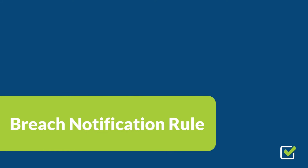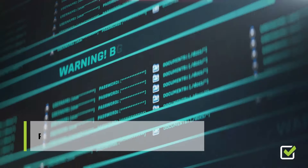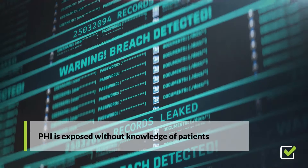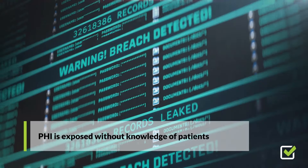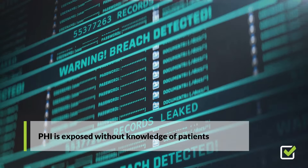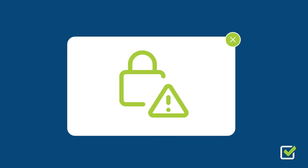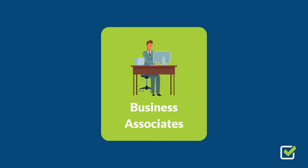The Breach Notification Rule defines the process when a data breach incident occurs, defined as when PHI is exposed without the knowledge or consent of patients. As soon as breaches are found, an organization must notify each person affected by a breach of unsecured PHI.